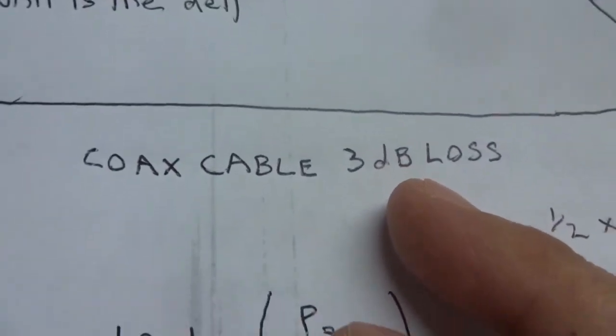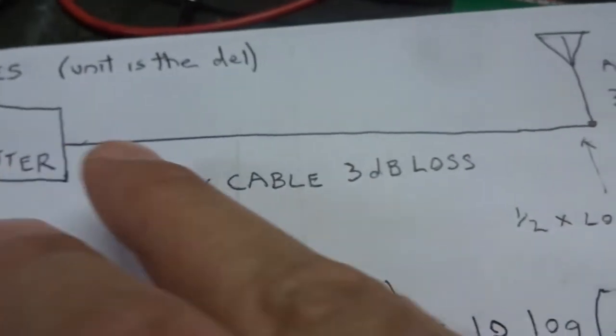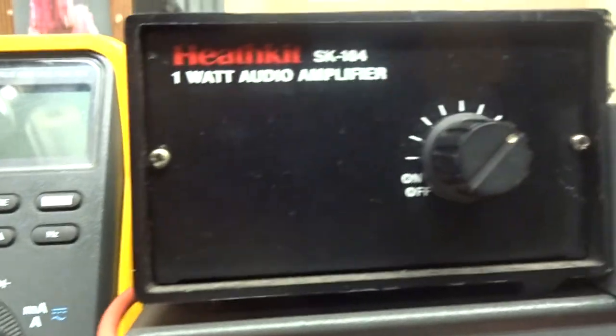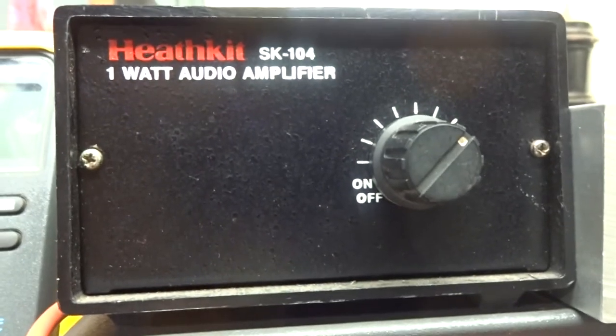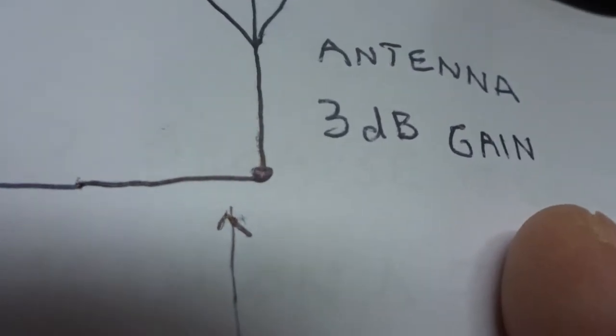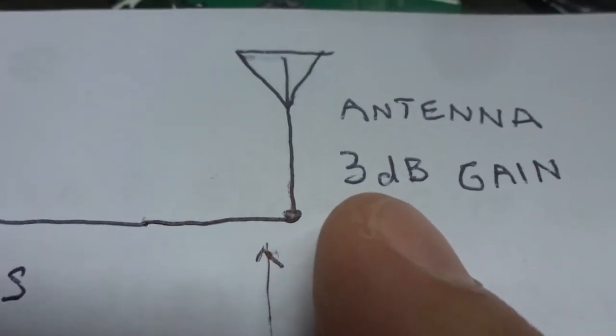So in this case, there's a 3-decibel loss in this long coax cable. This possibly could be hooked up to an audio amplifier, to an antenna with a 3-decibel gain, or a gain as high as you wish.